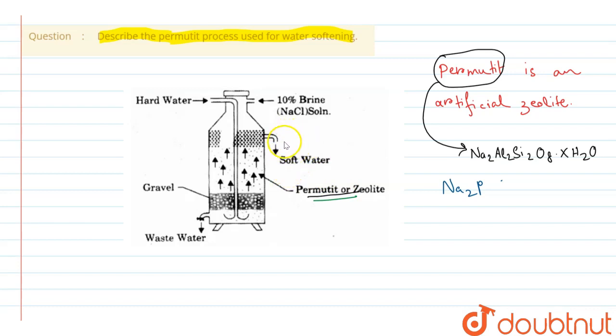ions exchange. Sodium permutate is slowly changed into calcium and magnesium permutate, and the water becomes soft with the removal of calcium and magnesium ions.